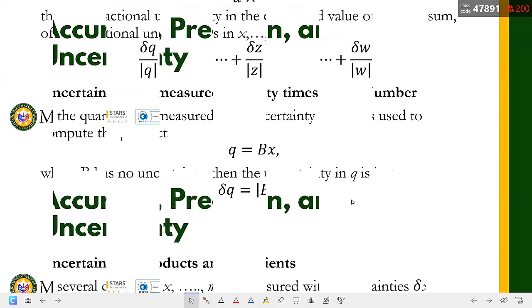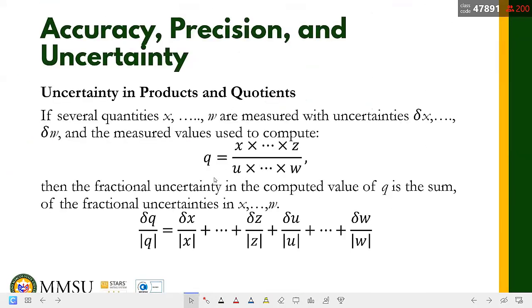Ang operation na ginamit natin ay division. So ito yung gagamitin natin. Itong delta Q, ito ngayon yung delta A natin. Since isang variable lang, so hanggang dito lang tayo. So delta A over the absolute value of A is equal to the delta of the measurement over the absolute value of the measurement.